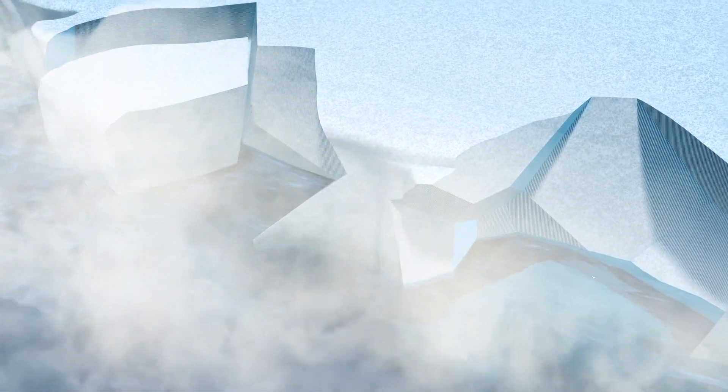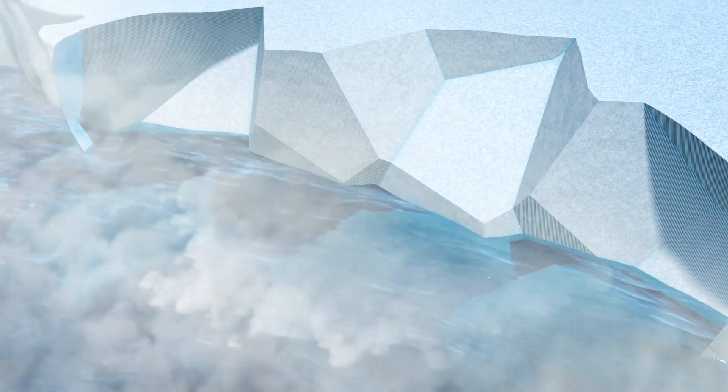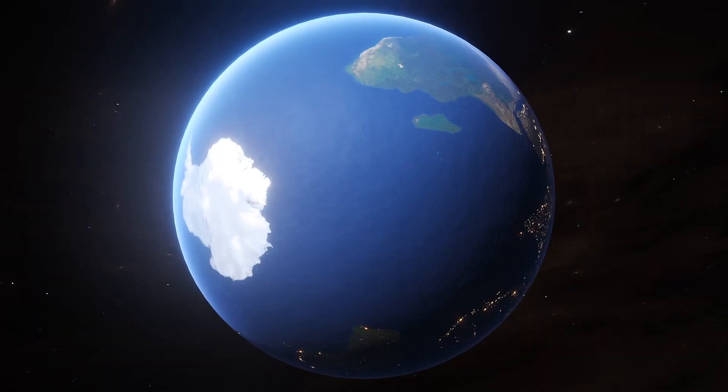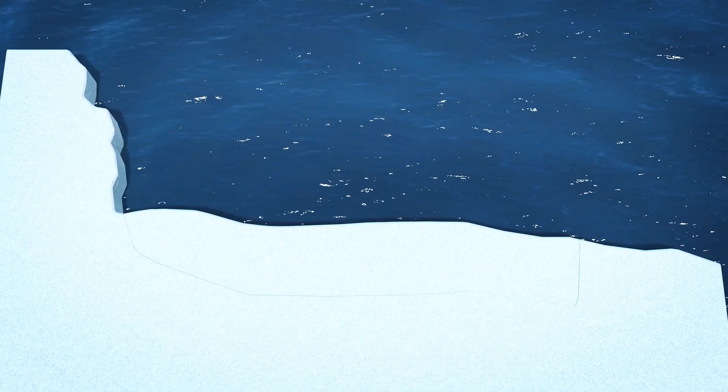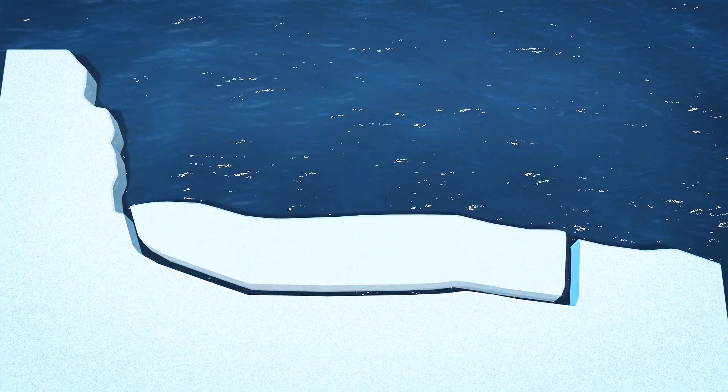The world's largest iceberg has broken off an ice shelf in Antarctica, according to the European Space Agency. The iceberg calved from the western side of the Rhône ice shelf into the Weddell Sea.